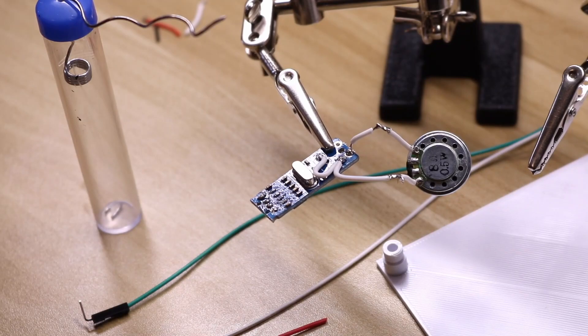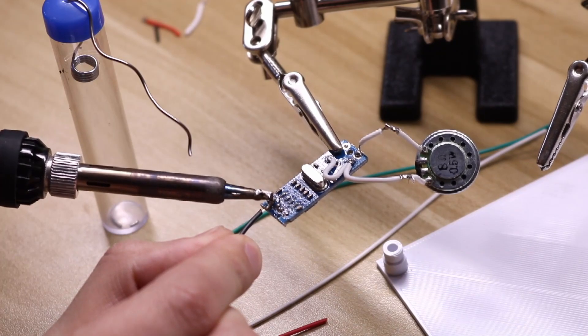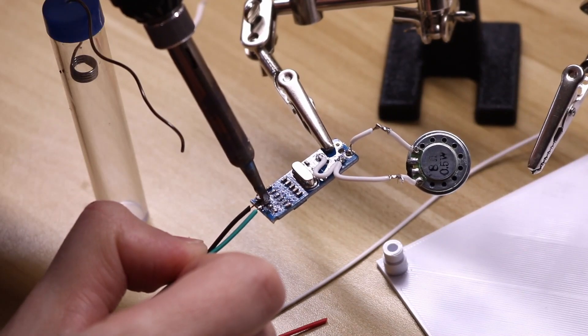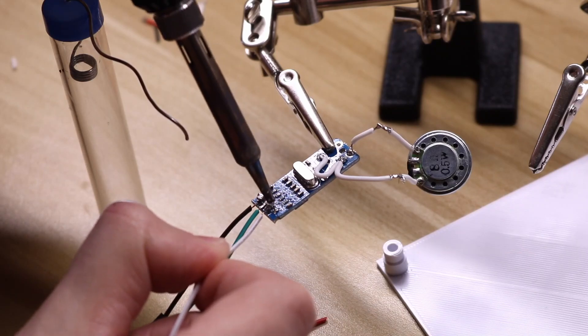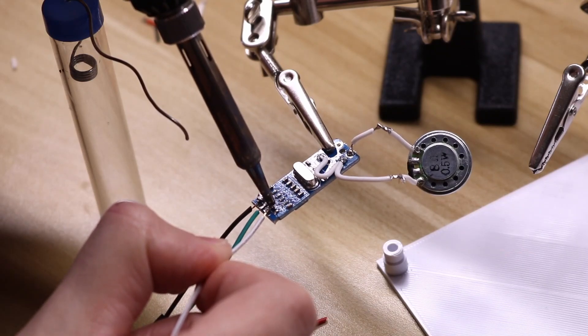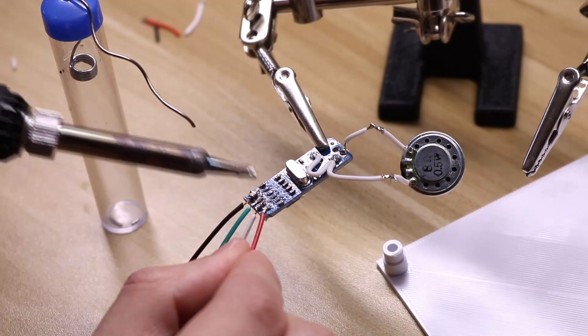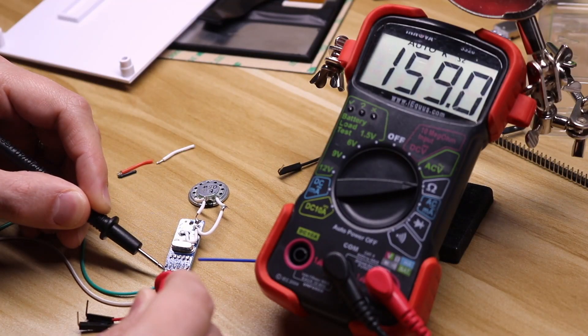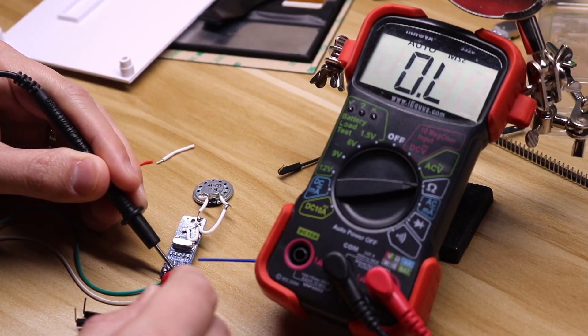Now we're going to solder on the pin headers to the USB connection. After you're done soldering the USB, come and make sure you don't have any shorts between pins.